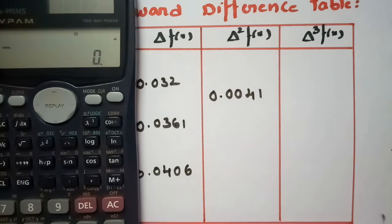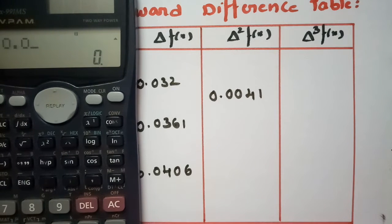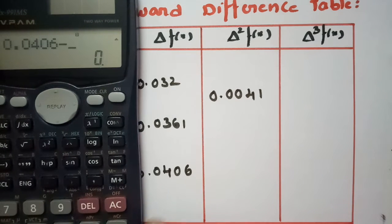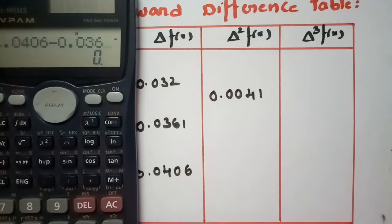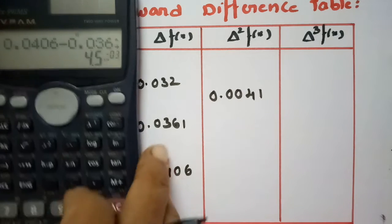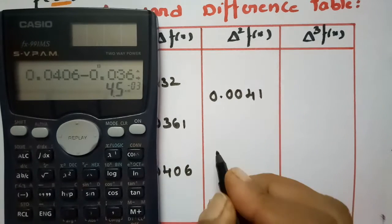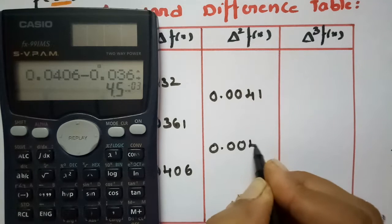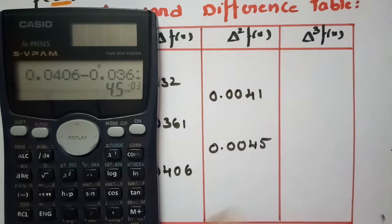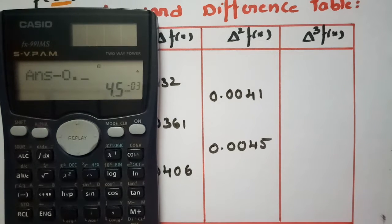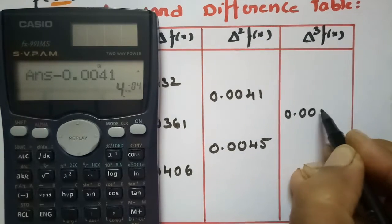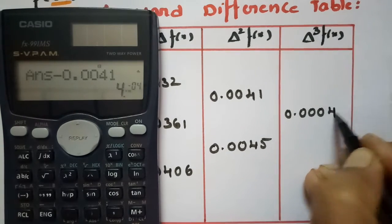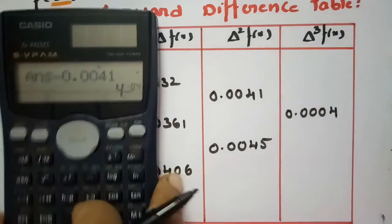The next difference: 0.0406 minus 0.0361 gives 0.0045. Then 0.0045 minus 0.0041 gives 0.0004. So the fourth difference value here is 0.0004.